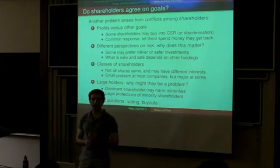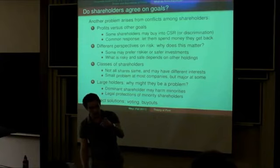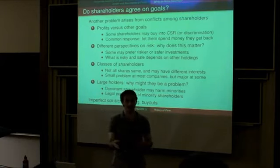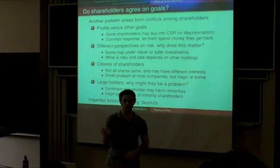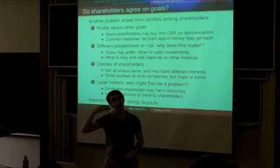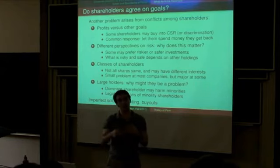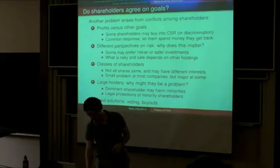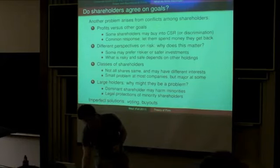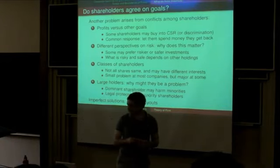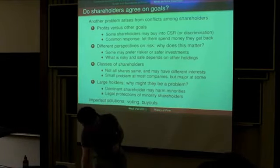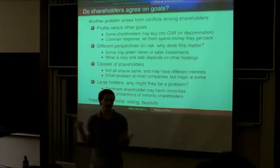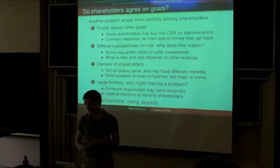Solutions to these problems include legal protections of shareholder rights and shareholder voting — which doesn't really deal with the majority problem but helps aggregate shareholders' views. Another solution is the possibility of a raider coming in and buying out the company, which forces profit maximization — if the company is worth less than what a raider could make it worth, there's an incentive for a raider to come in. A student notes that most corporations have ways around this, like supermajority voting requirements in bylaws to approve mergers. Almost any solution also creates problems elsewhere.